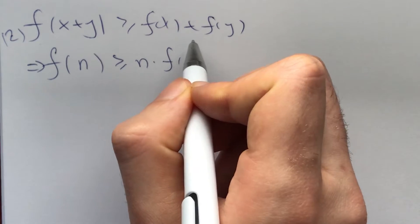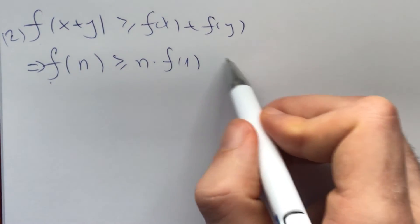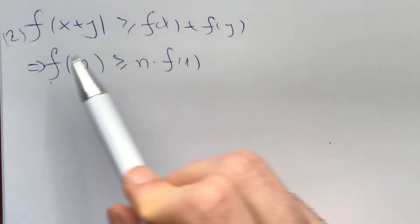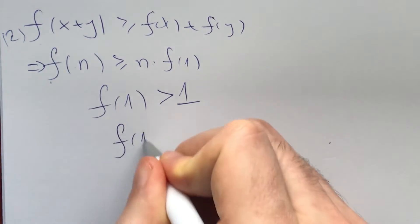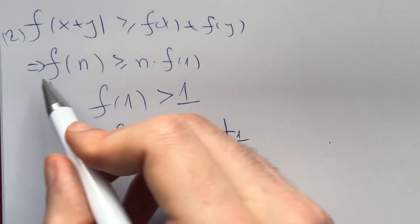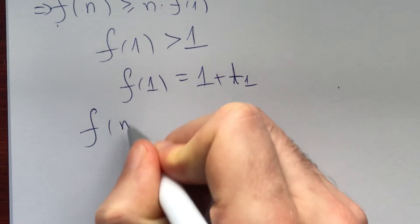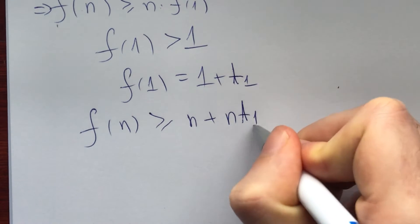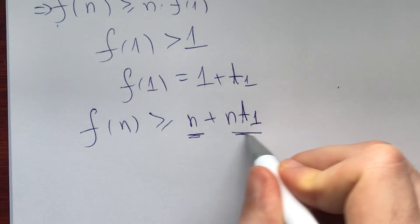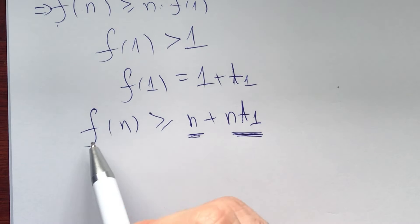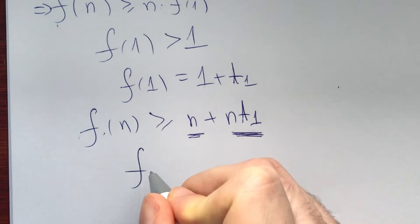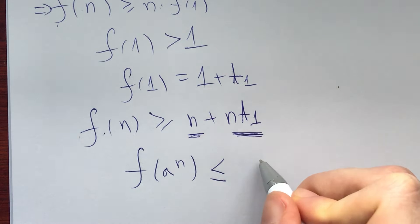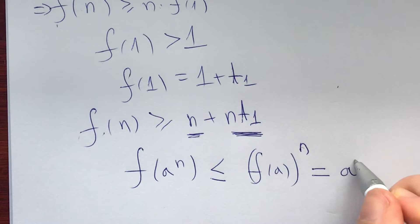By the second equation, if f(1) > 1 then f(n) ≥ n·f(1), which is ≥ n. If f(1) = 1 + t₁, the estimate becomes f(n) ≥ n + n·t₁. As n increases, this grows beyond any constant. This gives a bigger lower bound. For an upper bound: from inequality one, f(a^n) ≤ f(a)^n = a^n.